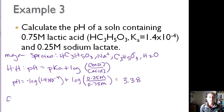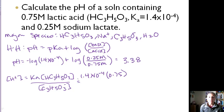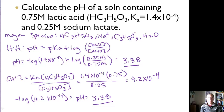An alternate way: H⁺ equals Ka times the concentration of acid over the concentration of conjugate base, which is just rearranging the equilibrium expression. Plugging in numbers: 1.4 × 10⁻⁴ times 0.75 divided by 0.25 gives us 4.2 × 10⁻⁴ for H⁺. So pH equals negative log of 4.2 × 10⁻⁴, which also equals 3.38. Either approach gives the same answer. The key point is that equilibrium concentration equals initial concentration because they're in large quantities in a buffer solution.